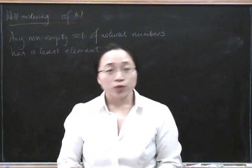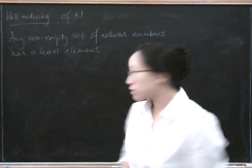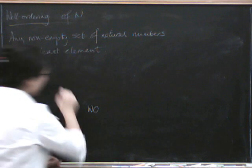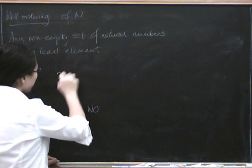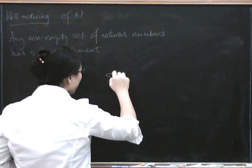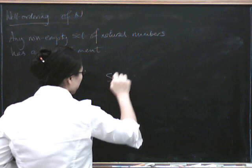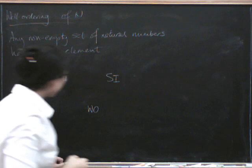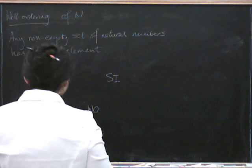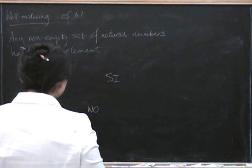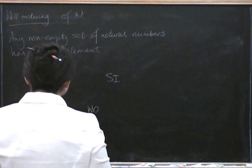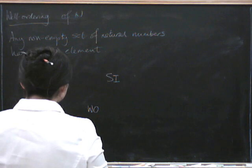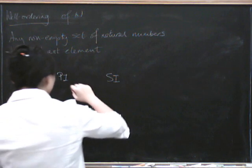So what we've got here are three principles: the well-ordering principle, which I'll call W-O, the principle of induction, and the principle of strong induction. And we're going to show that all three are equivalent. Probably the easiest one to prove is that the well-ordering principle implies the principle of induction.